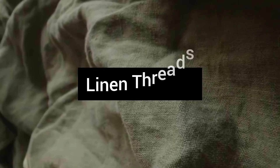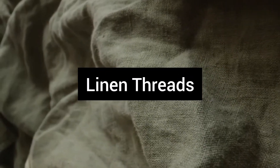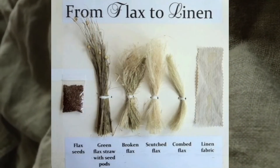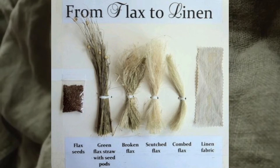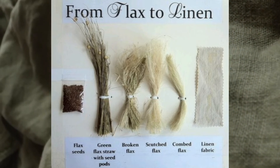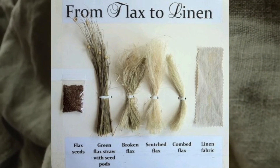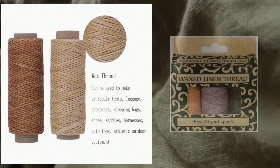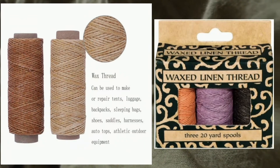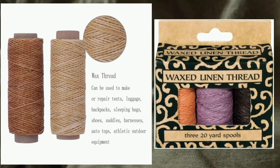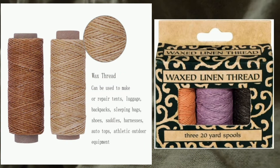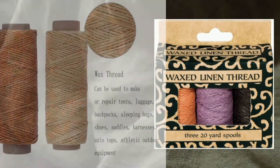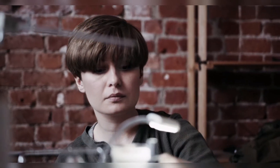Linen threads are spun from flax fibers. They are stronger and stiffer than cotton and have been used traditionally for stitching footwear, leather goods, and tents, as well as for button attaching. Linen threads have now been superseded by modern synthetic threads.